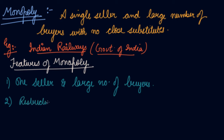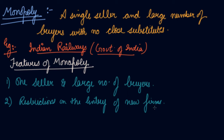The second feature is restrictions on the entry of new firms. Under monopoly there are restrictions on the entry of new firms into the monopoly industry. Nobody can come up and set up their own railway track — only the Indian government can do so. There is a long procedure required to get entry into the market.